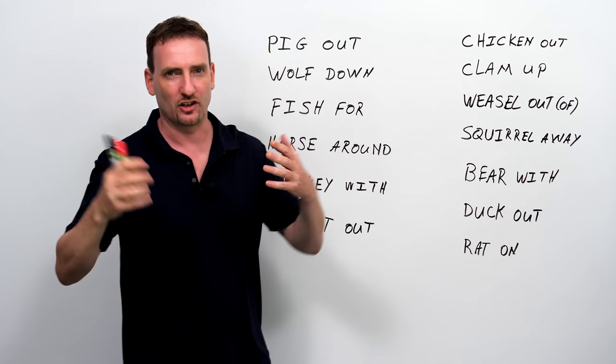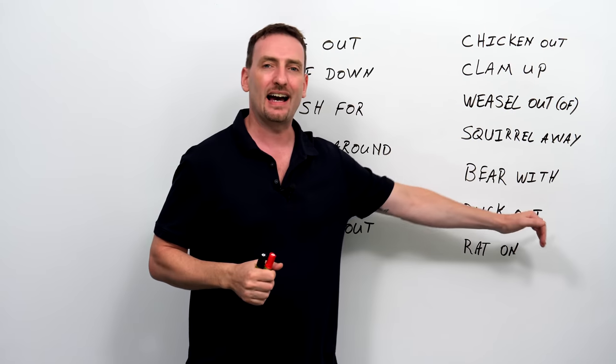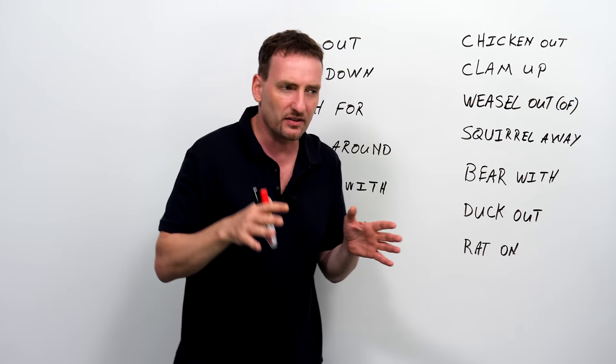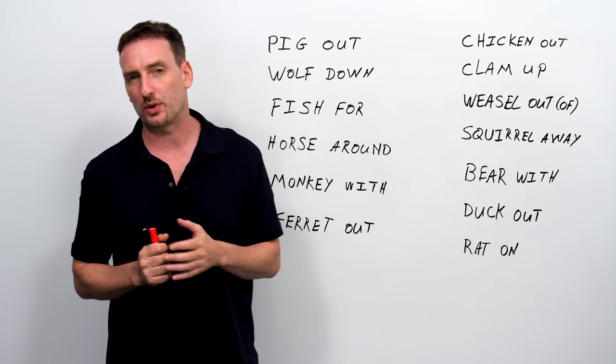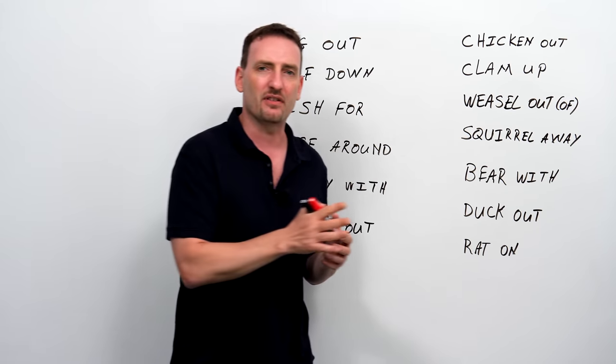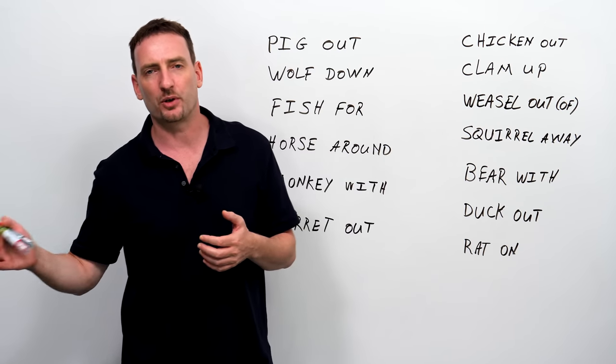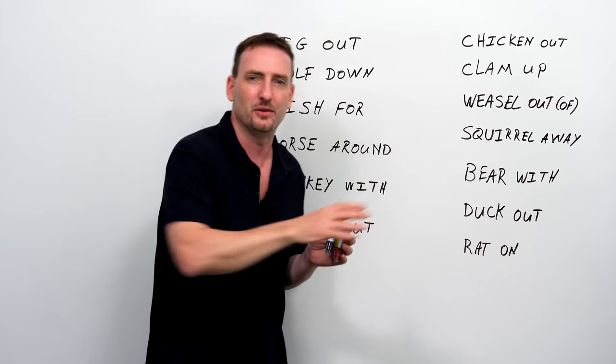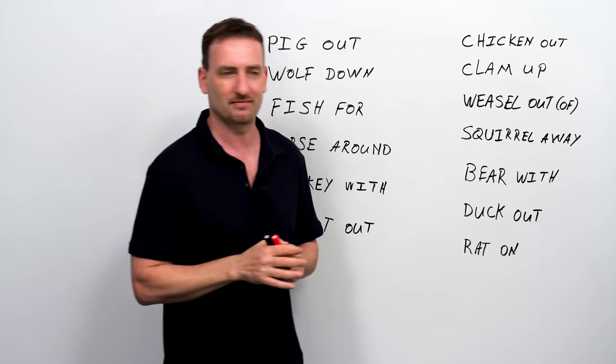It's also, of course, the animal, like Donald Duck. But if you duck out of a place, it means you leave without anybody noticing. So if you duck out of the party or you duck out of the ceremony, it means you went like this, and nobody could see you, and you left and went your way, and it's all good.